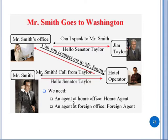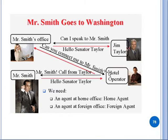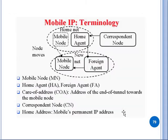For Mobile IP, we need an agent at the home office, called the home agent, and an agent at the foreign office, called the foreign agent. Through a simple example, you can understand how Mobile IP terminology works and how communication is forwarded through the home and foreign agents.